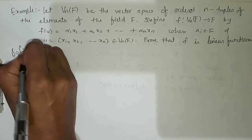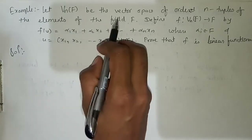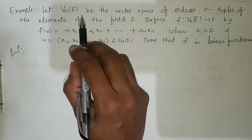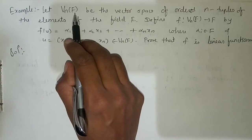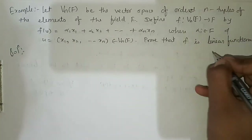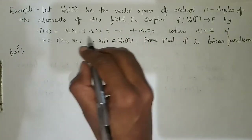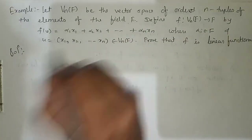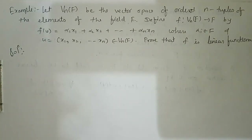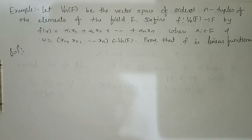Solution: It is given that Vn(F) is a vector space and f is a mapping from Vn(F) to F defined as f(u) = α1·x1 + α2·x2 + ... + αn·xn. We have to prove that f is a linear functional. To do so, it is sufficient to prove that f(αu + βv) = α·f(u) + β·f(v).